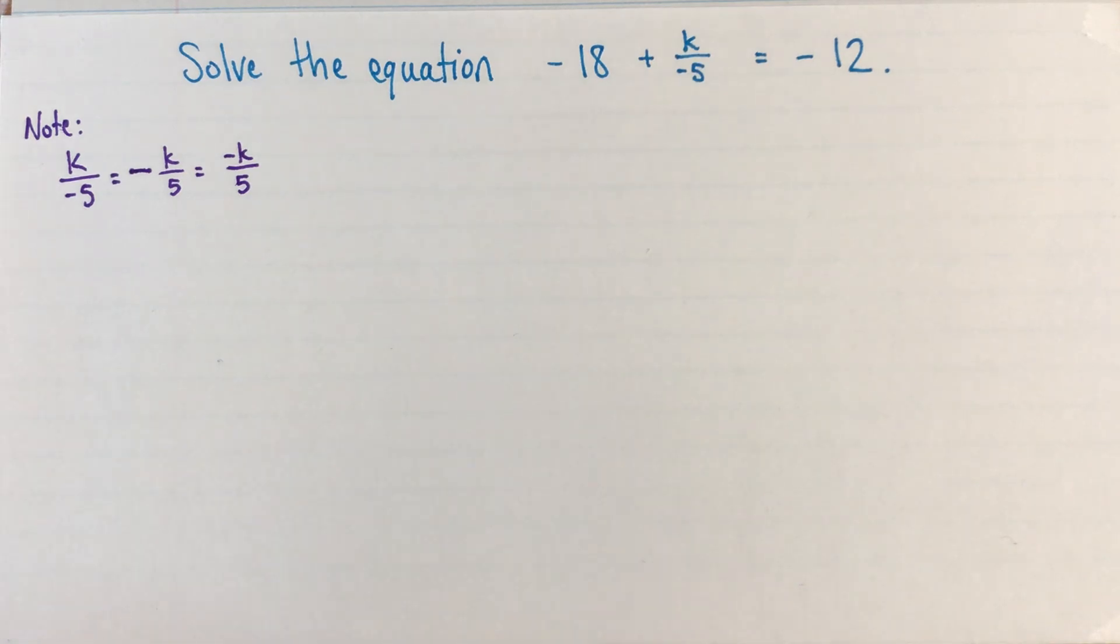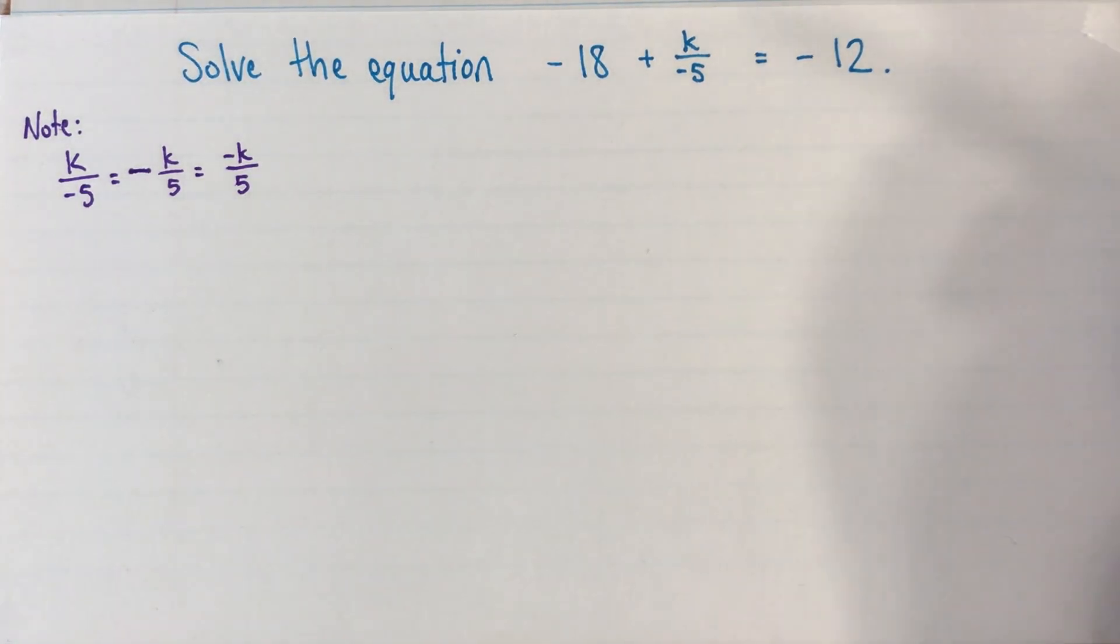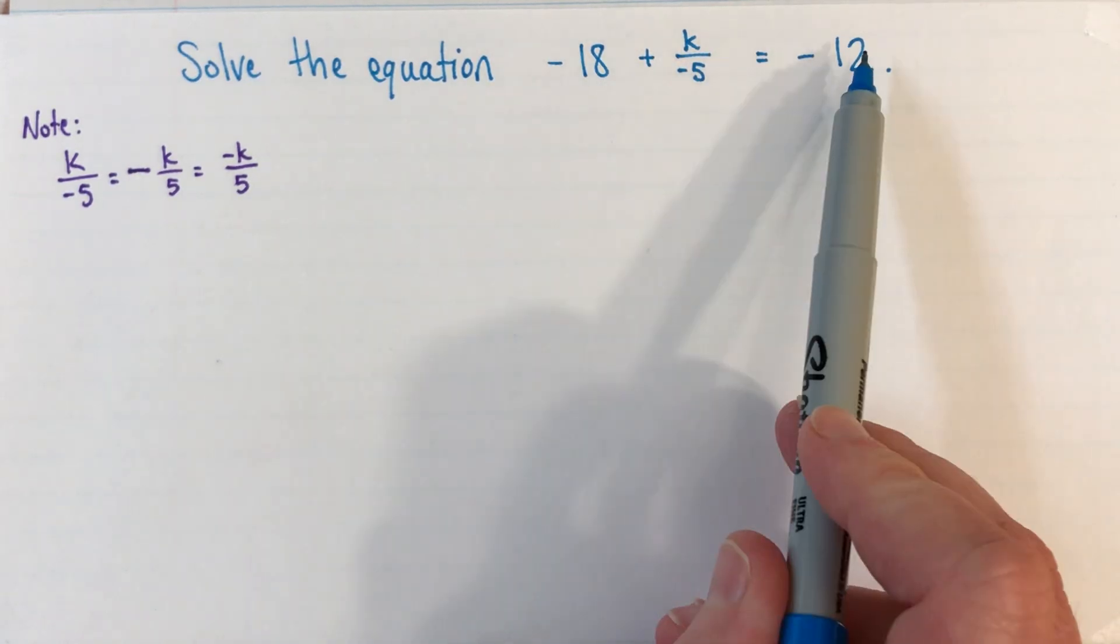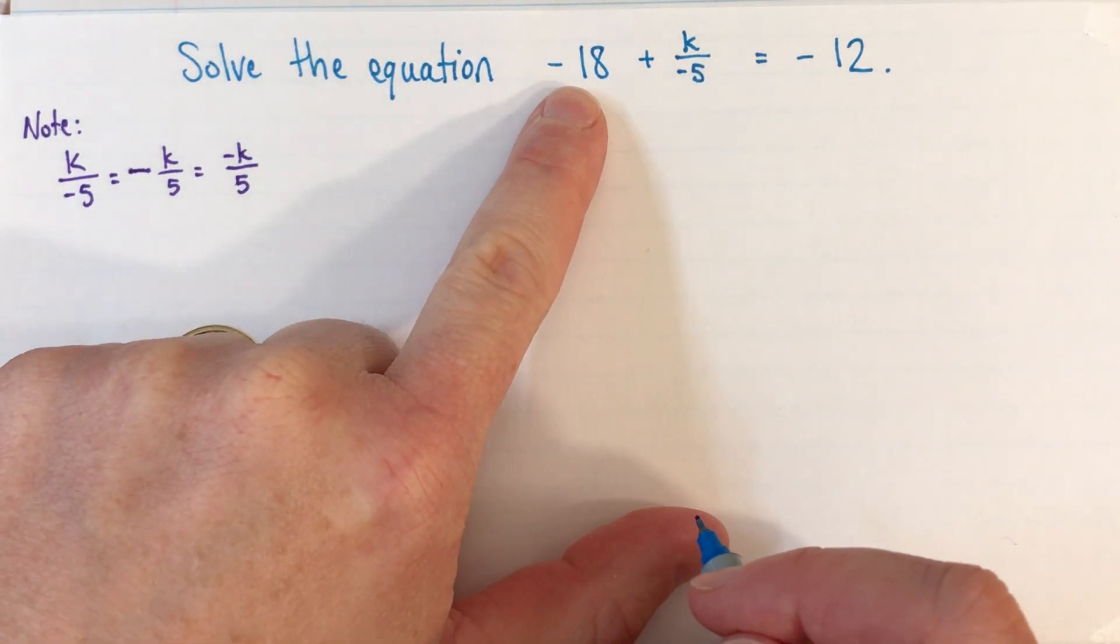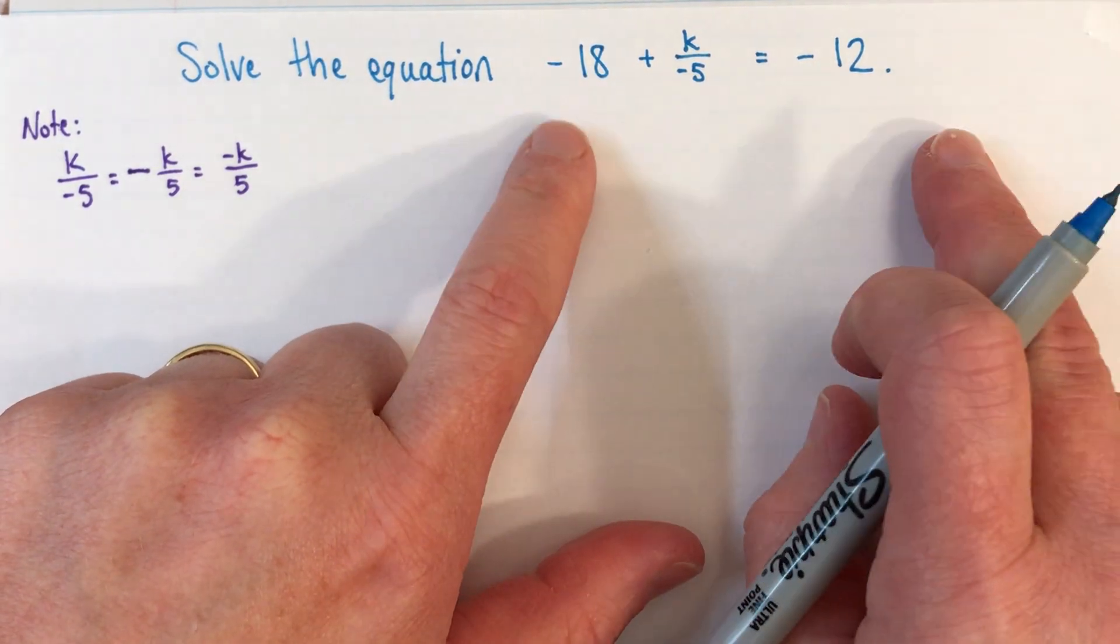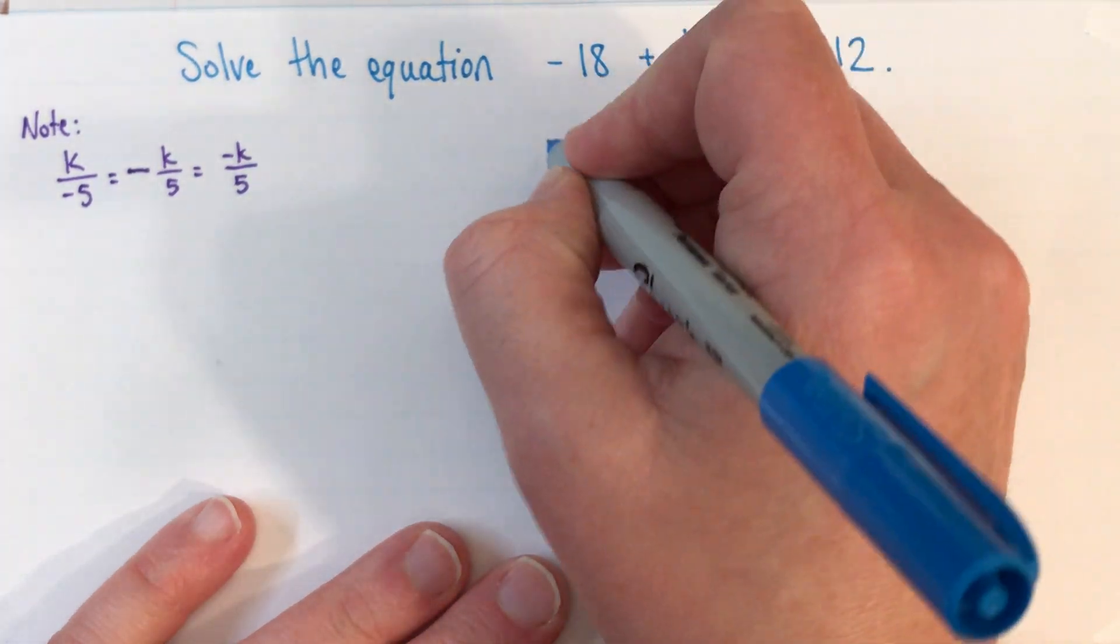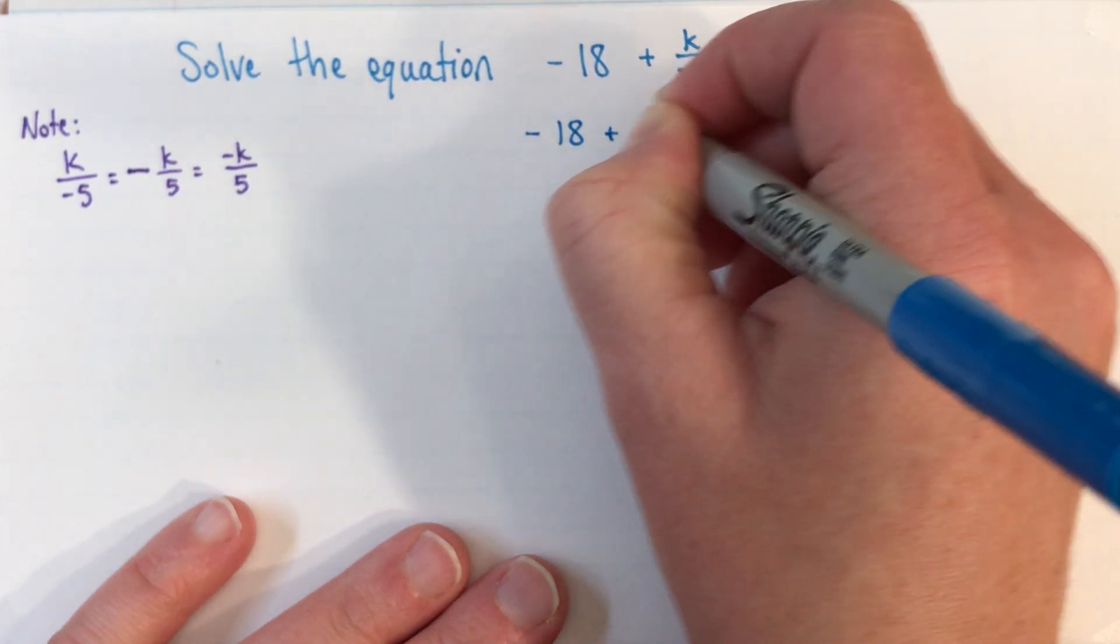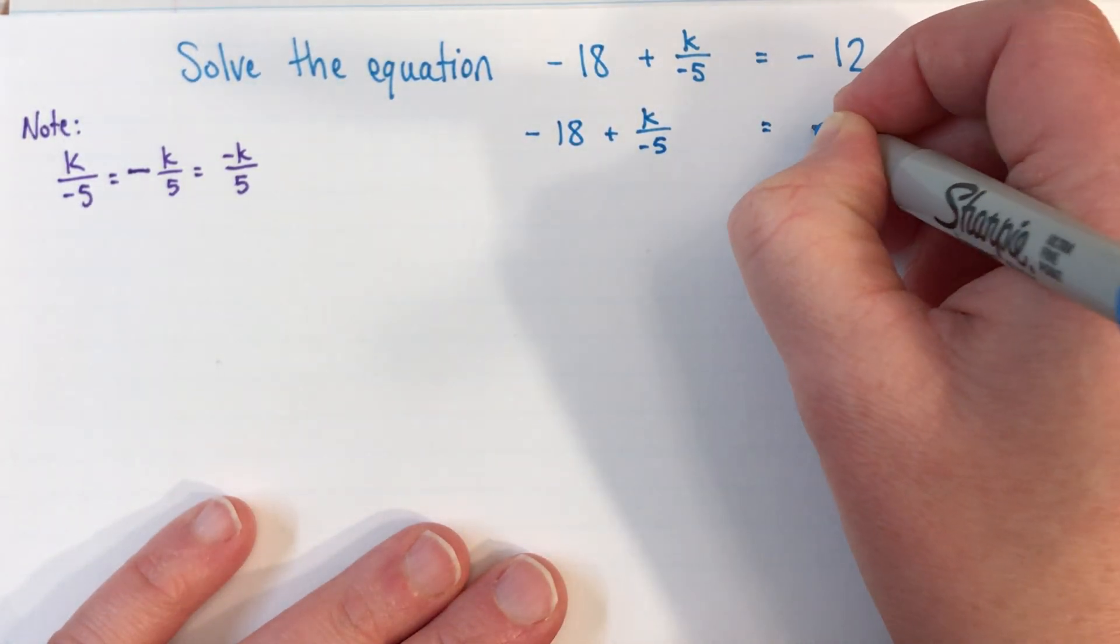So -18 + k/(-5) = -12. I'm going to start here by isolating my k/(-5). So I'll get rid of my -18 here first. How can I get rid of -18? If I have -18, and then I added positive 18 to it, that would give me 0. So that would do it. So that's what I'll do. I'll add positive 18 to both sides. Now before I even write that down, I'm going to copy what I have. -18 + k/(-5), and I'll leave a little space. Equals -12.